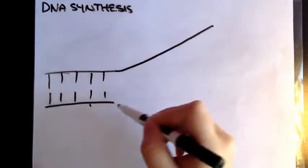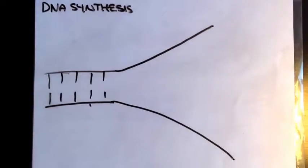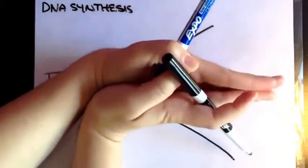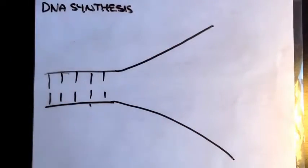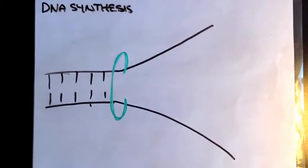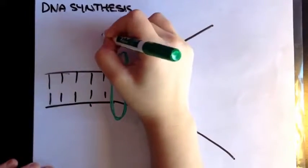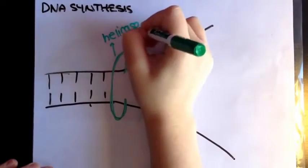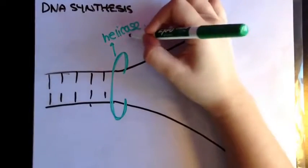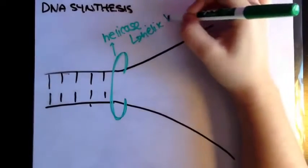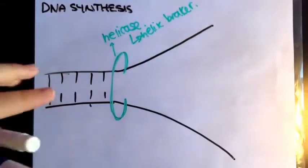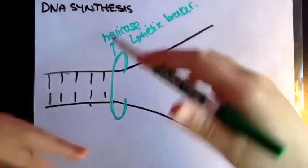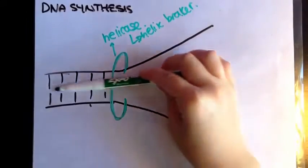What opens it up is a little clamp structure that comes on here, and what that is called is a helicase. So a helicase is basically a helix breaker. What's happening is it's opening up the helix — it's breaking open the helix and just coming through and breaking it open.